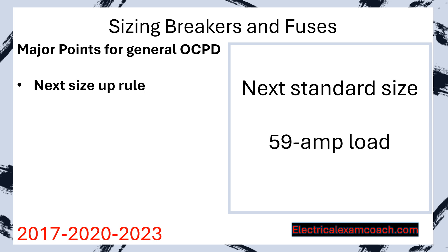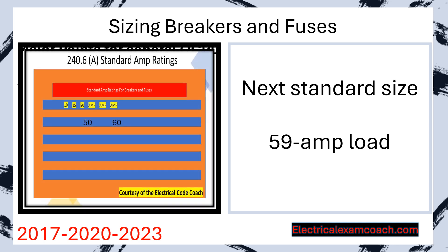Let's imagine that we have a 59 amp known load. Do they make a 59 amp breaker? They don't. What we would do is go to Table 240.6A and look at the next standard size. We have 15, 20, 30, then 50 — there's no 55, and it jumps to 60. If we have a 59 amp load, we're going to choose a 60 amp overcurrent protective device.